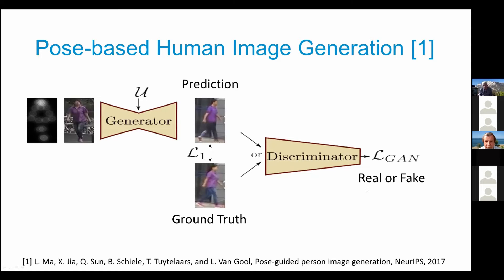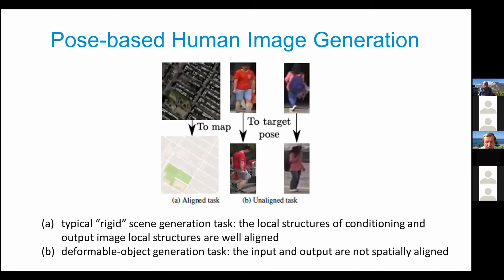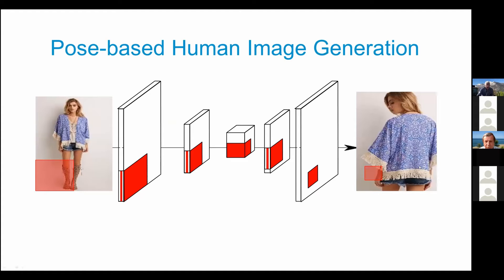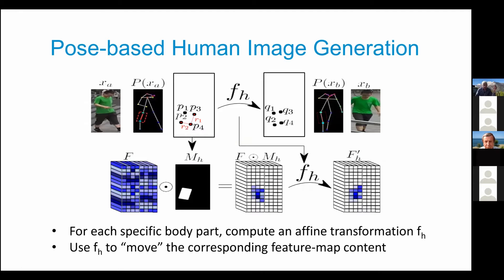This is a standard approach for image-to-image translation. There are two types of tasks: the rigid region generation task, where the local structure of conditioning and output image are well aligned, versus the deformable object generation task, where input and output are not spatially aligned. For example, if you take an area from the source image and map it to the target, it corresponds to a completely different area. To do it correctly you need a deformation — precisely what the deformable GAN does.